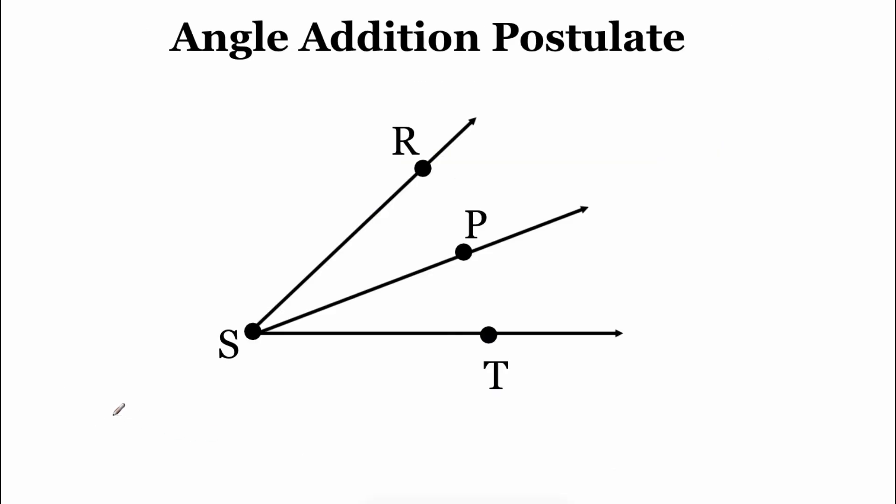When we're looking at angles, there's this thing called the angle addition postulate. So if we take a look at our picture, we've got this big angle RST, and then it's got that ray that runs from S to P going down the middle of it. And what that does is it splits this bigger angle into two smaller angles. So the way our angle addition postulate works is if we take the two small angles and add them together, then that measure should equal the big angle.